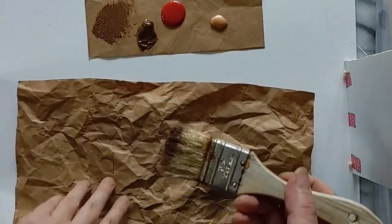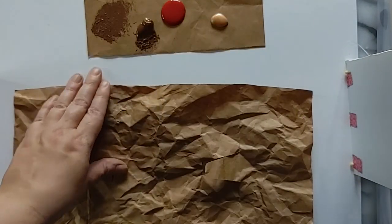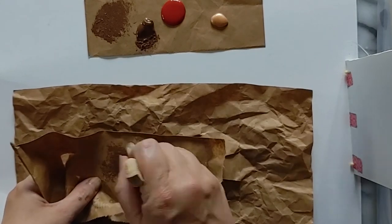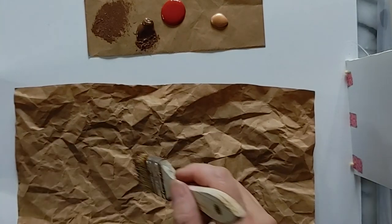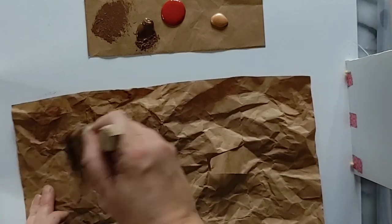So I'm going to use the dry brush technique. So you can see that I put some paint on my brush. And then I'm going to blot most of it off on a scrap piece of paper before I brush it over the surface.